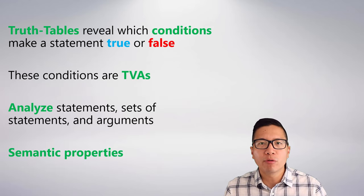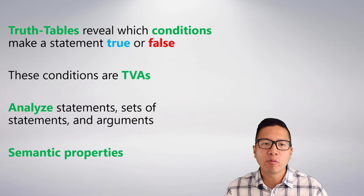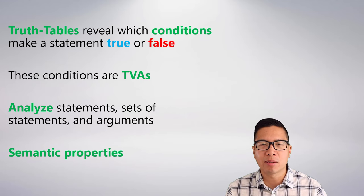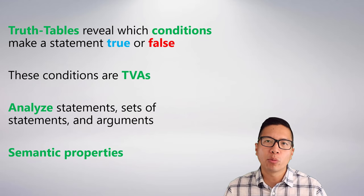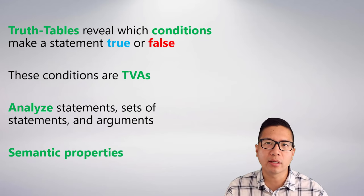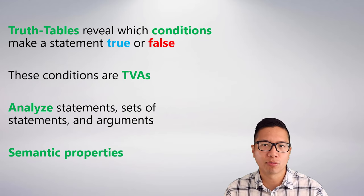That's how we do a full truth table. We'll look at more examples of larger truth tables, but what we really want to do next is not just find the conditions for when things are true or false — we want to analyze these statements in a deeper way. We need new semantic properties so we can characterize statements and arguments, and we need to translate old semantic properties like validity into the language of truth tables.